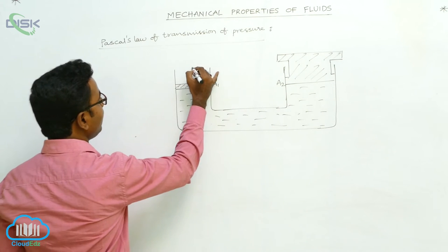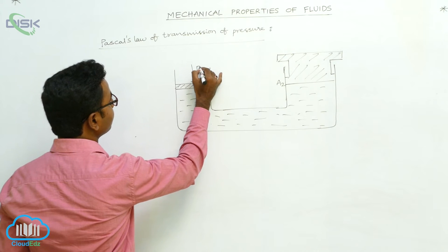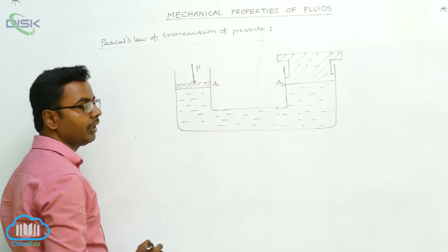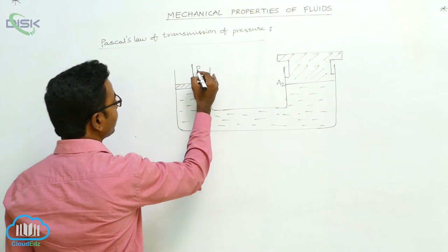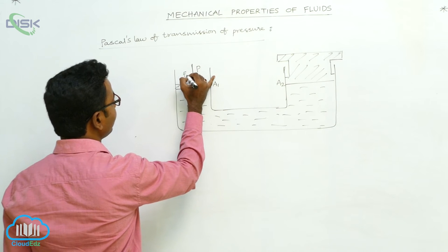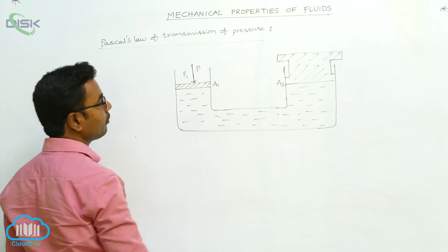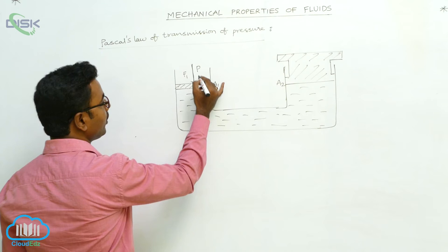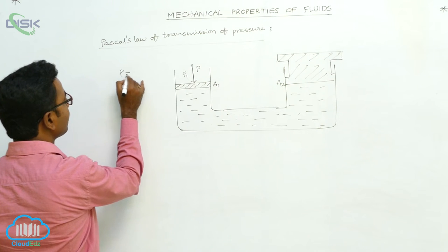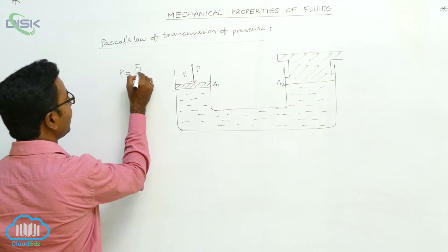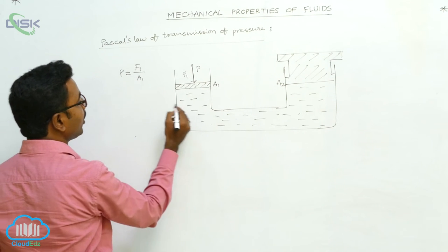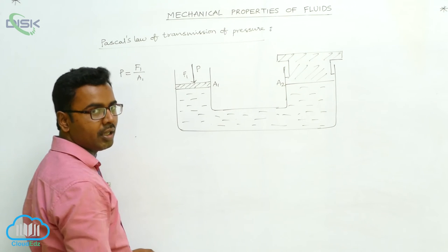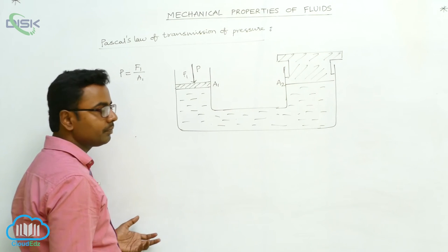When we apply a pressure P on the cylinder of smaller area, a force F1 acts on the cylinder of area A1. So the pressure acting on it is P = F1 / A1.